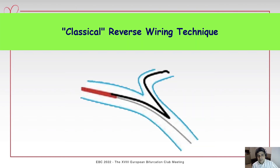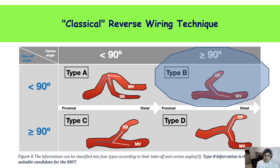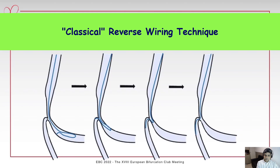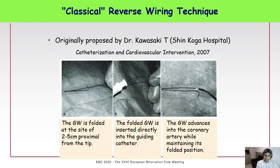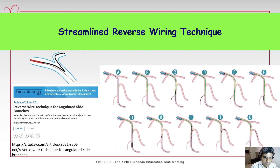This is the reverse wiring technique, which is very important to know. It can help in some situations. The best bifurcation angles for this technique are a carina angle of more than 90 degrees and a take-off angle of less than 90 degrees. The technique consists of advancement of a hairpin-shaped wire, and with a gentle pullback, we perform reverse wiring of the unwired side branch. This is the classical description published in CCI in 2007, where the hairpin-shaped wire is advanced through the toolkit.